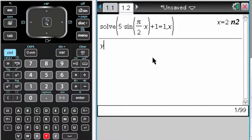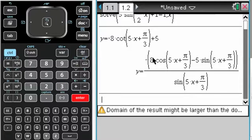if I'm talking about the function y equals negative 8 cotangent of 5x plus pi over 3 plus 5, let's say. Wow. And I want to find where that has its vertical asymptotes, kind of generalize that.